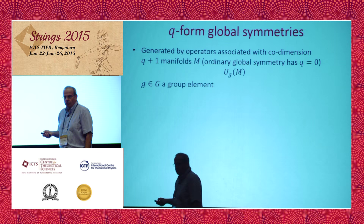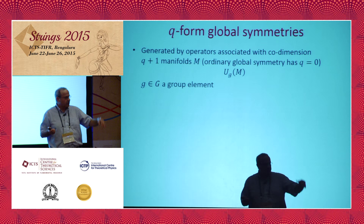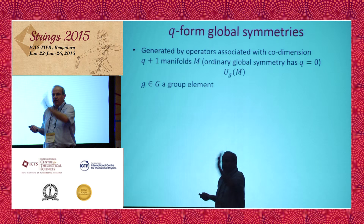The difference is that the manifold M is not co-dimension 1 but co-dimension Q plus 1. Ordinary global symmetries have Q equals 0. This U still exists and G is a group element. This is the only difference — M is of higher co-dimension. And from this moment on, this is the only place I make a new definition; everything else just follows logically.